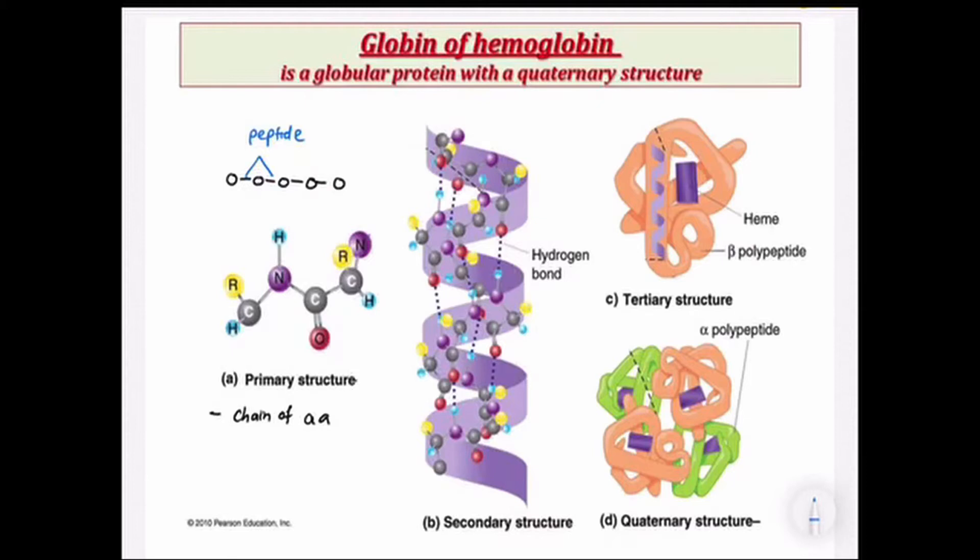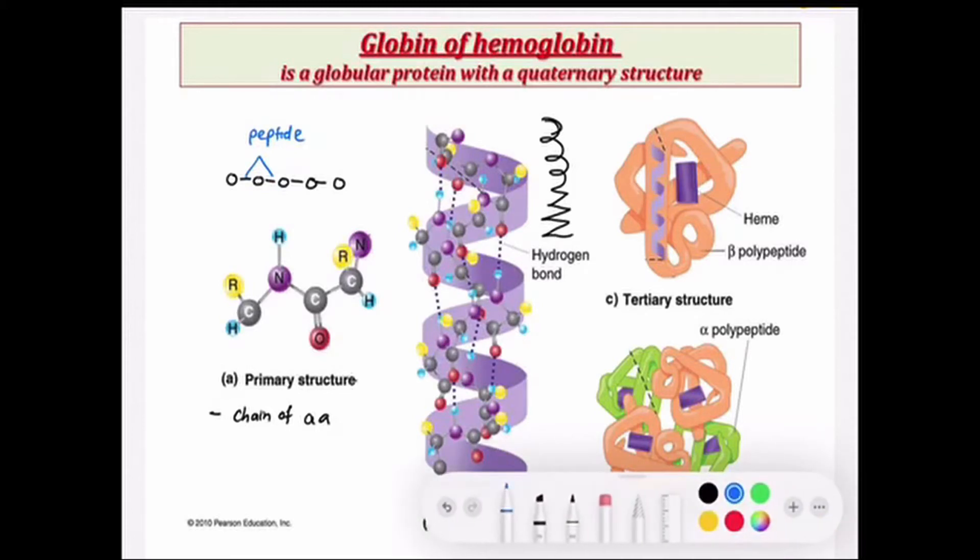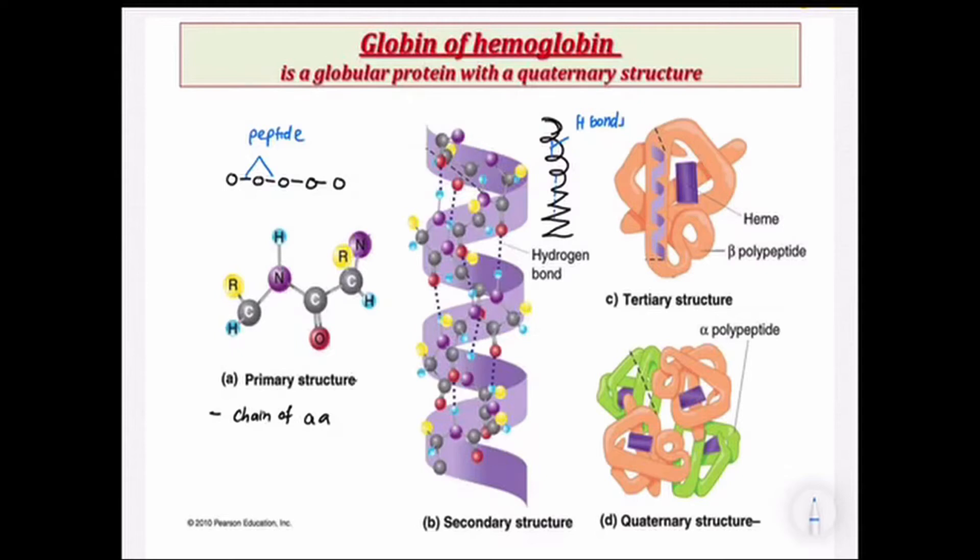Secondary structure will be still made out of single chain of protein, but the protein will coil into alpha helix or beta pleated shape. How is the shape being maintained? It is maintained by hydrogen bonds. Don't forget, the peptide bond is still there, but it's the hydrogen bond that actually maintains the shape.